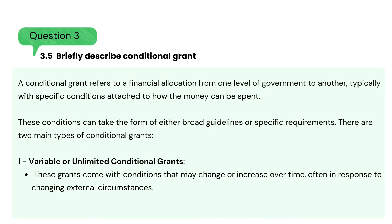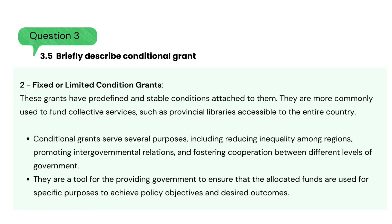Briefly describe what is a conditional grant. A conditional grant refers to a financial allocation from one level of government to another, typically with specific conditions attached to how the money can be spent. These conditions can take the form of either broad guidelines or specific requirements. There are two main types: 1. Variable or unlimited conditional grants — these grants come with conditions that may change or increase over time, often in response to changing external circumstances. 2. Fixed or limited condition grants — these grants have predefined and stable conditions attached to them, and are more commonly used to fund collective services, such as provincial libraries accessible to the entire country.